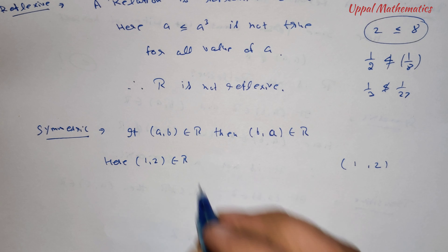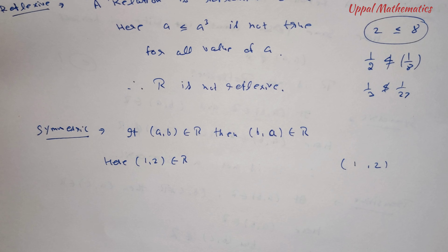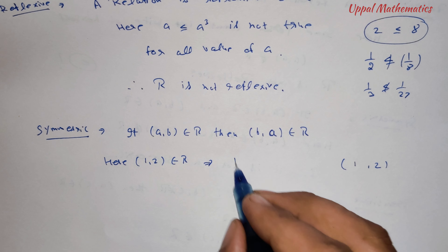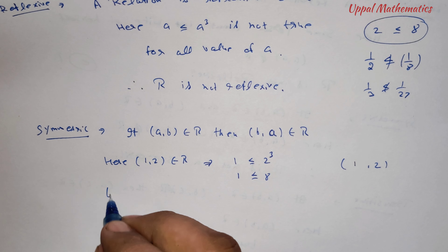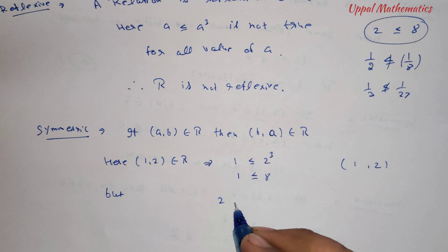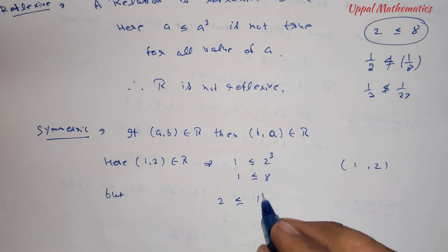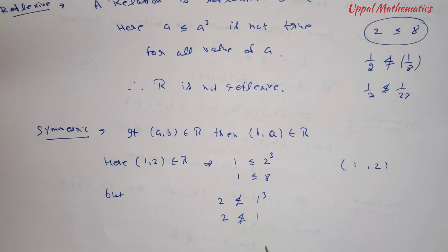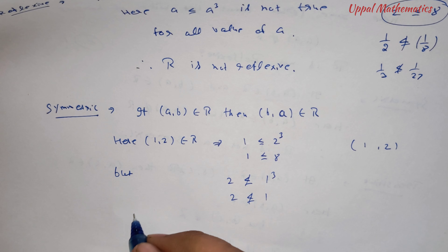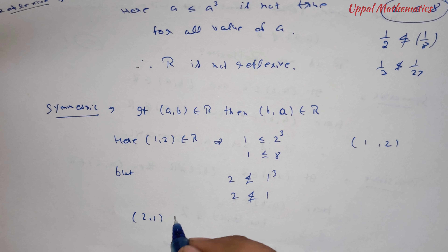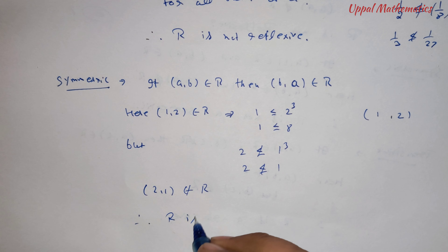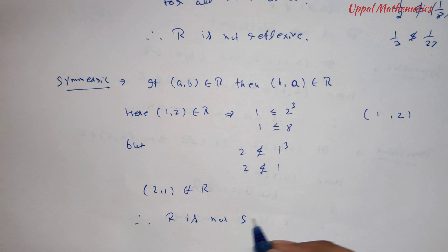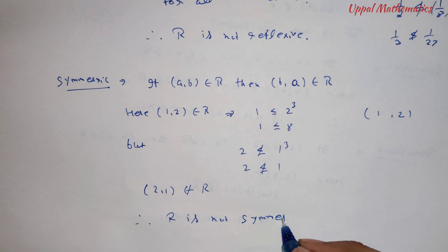Next, check symmetric. Take (1, 2): 1 ≤ 2³ = 8, which is true, so (1, 2) belongs to R. But 2 is not less than or equal to 1³ = 1, so (2, 1) does not belong to R. Therefore R is not symmetric.